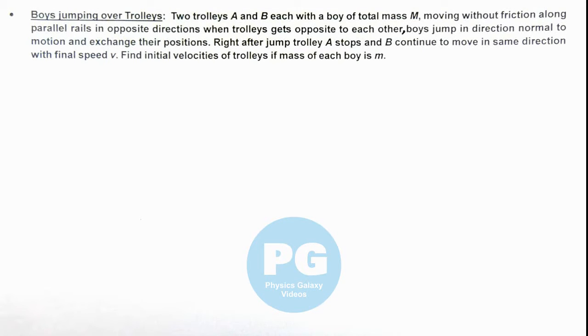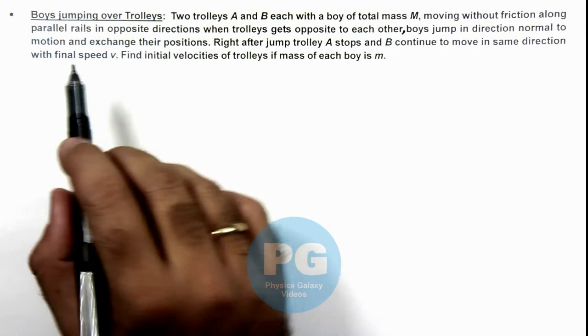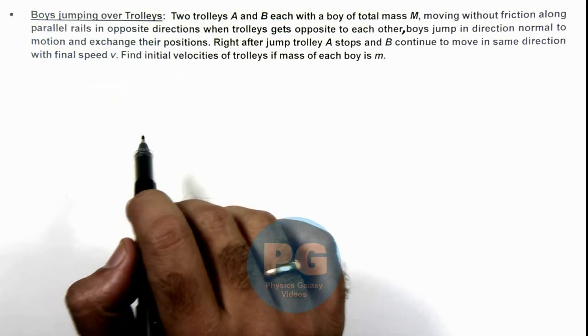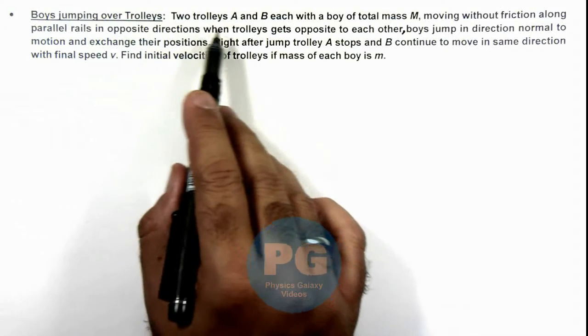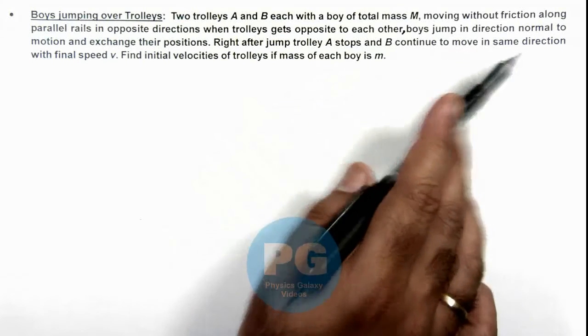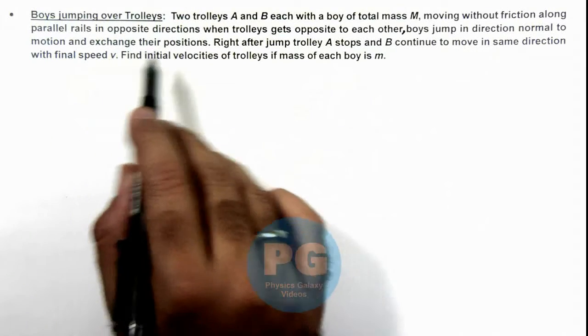In this illustration, we'll study about a case when boys jumping over trolleys. Here we are given two trolleys A and B, each with a boy of total mass M, moving without friction along parallel rails in opposite directions.